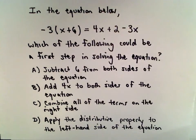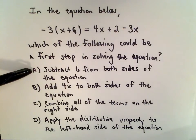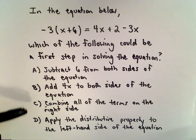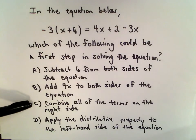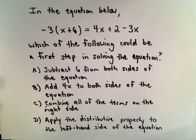Some of these things are definitely valid - you could do them, but they're not necessarily going to help you arrive at the answer. That's what we're looking for, something that would help us get at the answer. Option A says subtract 6 from both sides of the equation, B says add 4x to both sides, C says combine all of the terms on the right side, and D says apply the distributive property to the left-hand side of the equation.